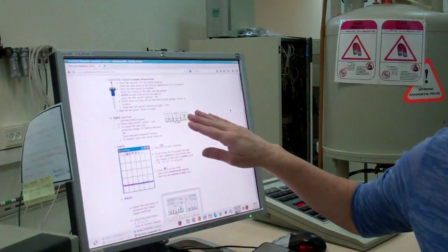Number three, properly placing our NMR sample into the magnetic field. And number four, optional spinning of the NMR tube inside the probe.